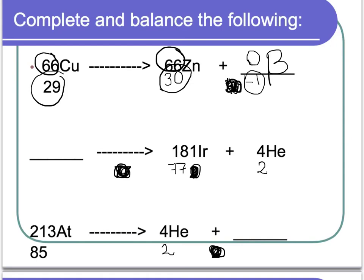Alright, let's look at the second example. So this one we don't know what we're going to have to start with, but we do know the parts of the radiation. So over here we've got for the atomic number 77 plus 2, so we know in our answer it's going to be 79. And on the top for the mass number we have 181 plus 4, so on the top we're going to have 185.